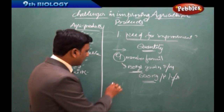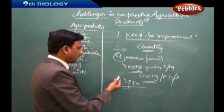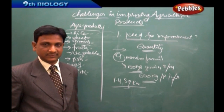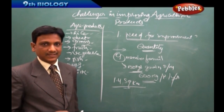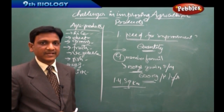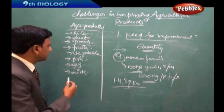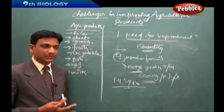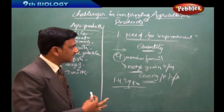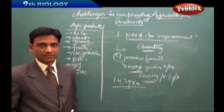To grow that amount of grains, nearly 1.4 square kilometers of land is required for just one family. Now consider how many families there are in India — how much land is required and how much grain must be produced to meet the demand. This example helps us understand the need for improvement in the production of agricultural products.